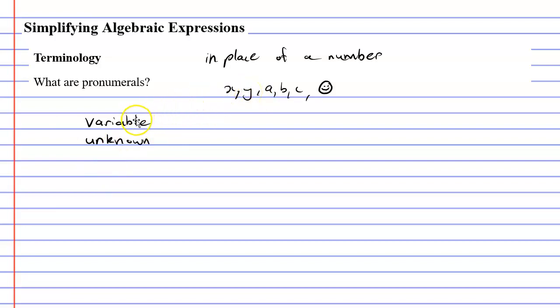The reason we often call them variables is because they vary or change. They vary or change. So what does that mean? Well, in one question x might equal 1 and then in another question x might equal 2. So these pronumerals, they keep changing each time.